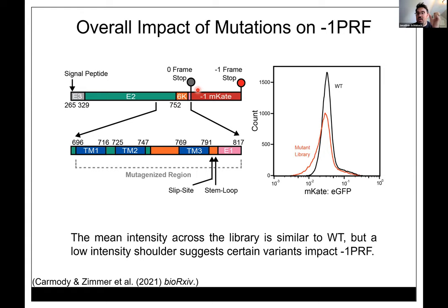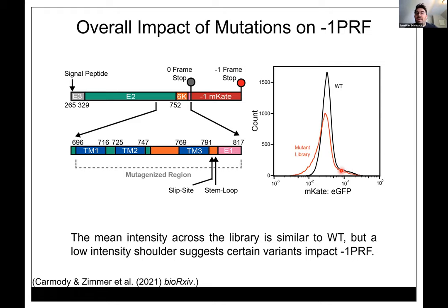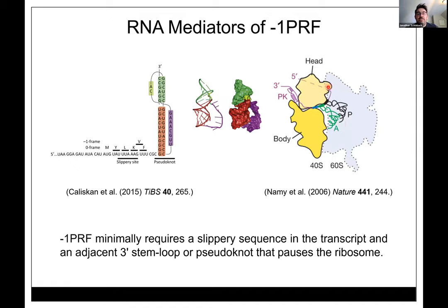If you delete the downstream RNA segment, frameshifting goes away. The pulling on the nascent chain seems to make efficiency go way up. So what happens when we make mutations in this region? The native transcript sequence is shown. At the slip site and downstream, we can rationalize mutations in terms of the transcript structure, since this hasn't been translated at the point of frameshifting.